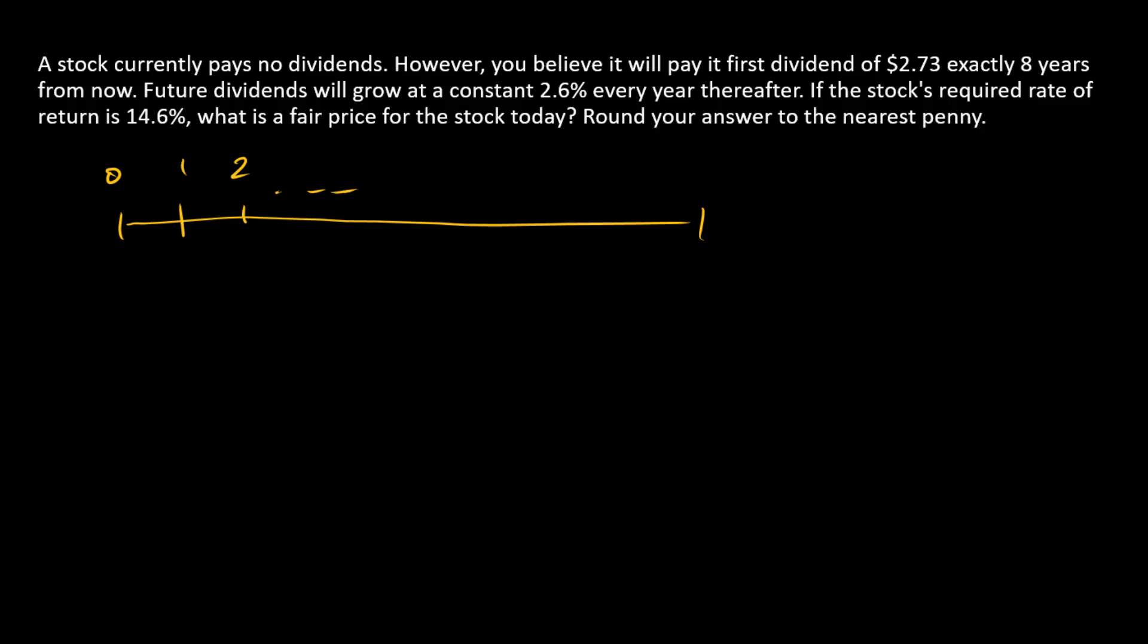For the first several years, up to actually year seven, so eight years away is when the first dividend is going to happen. Up through year seven we've got nothing going on, and then in year eight and nine and forward we're going to have some dividends. The first one is $2.73.